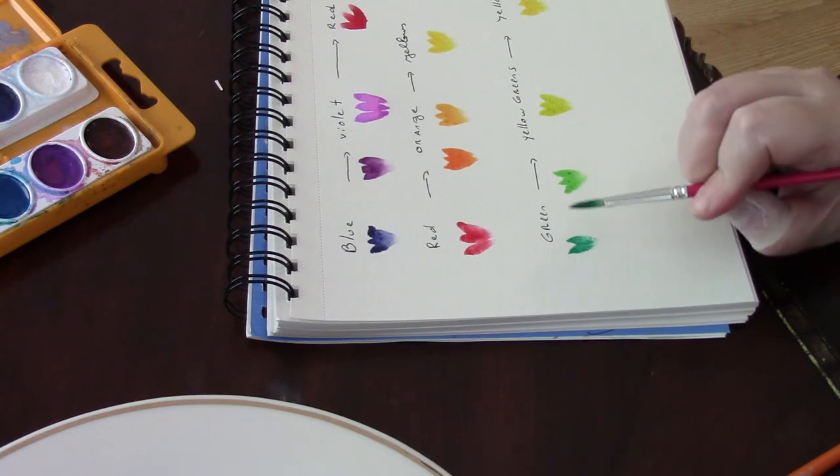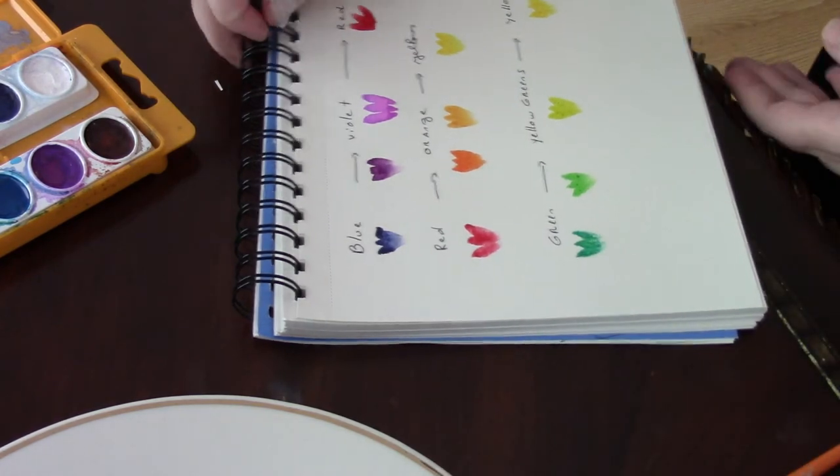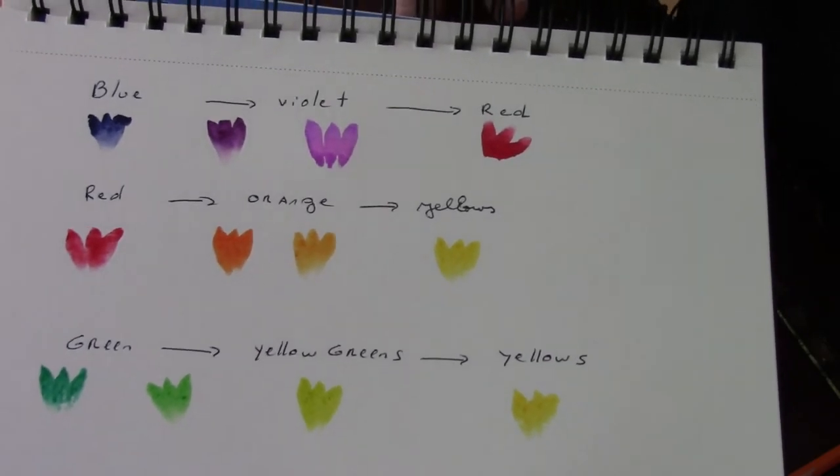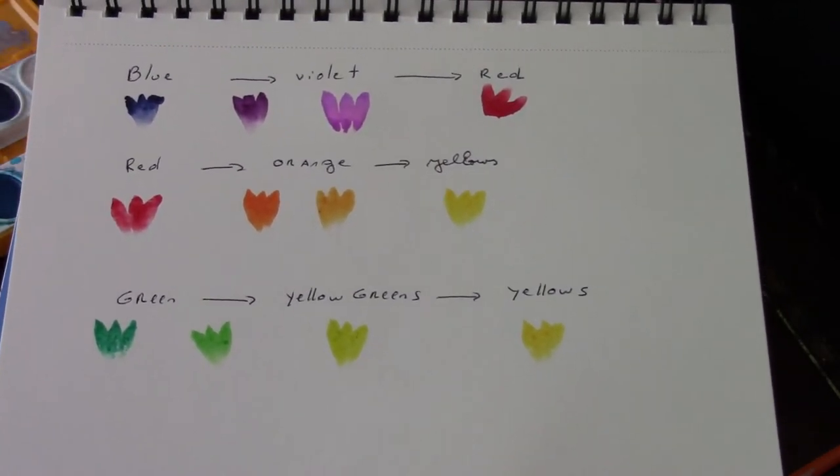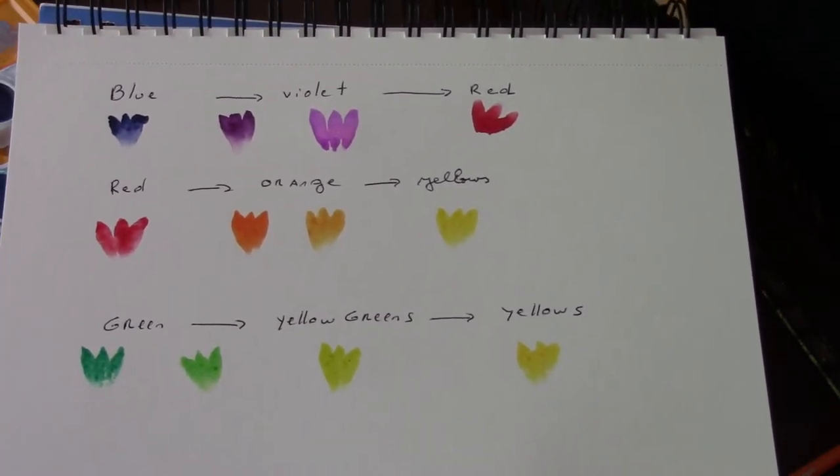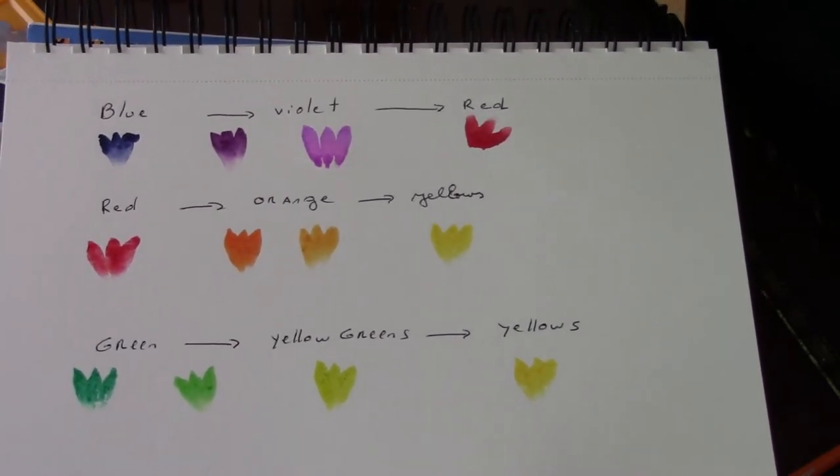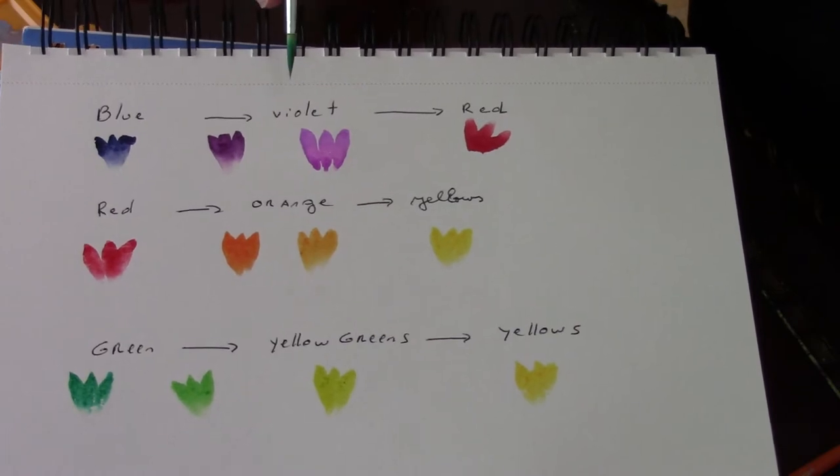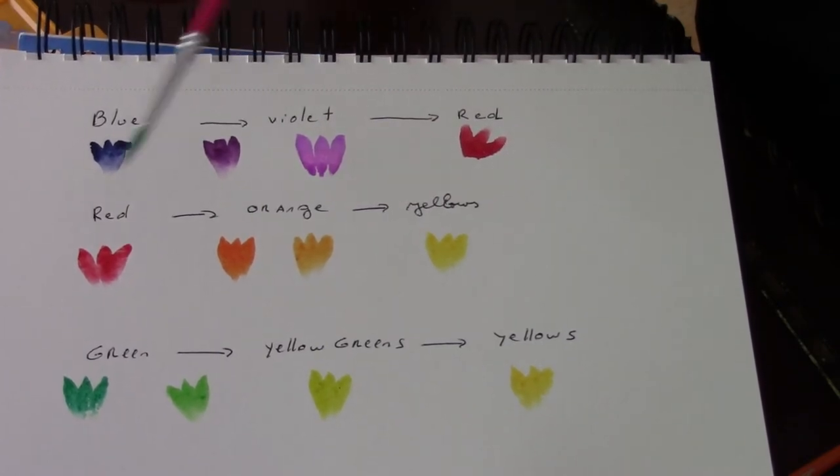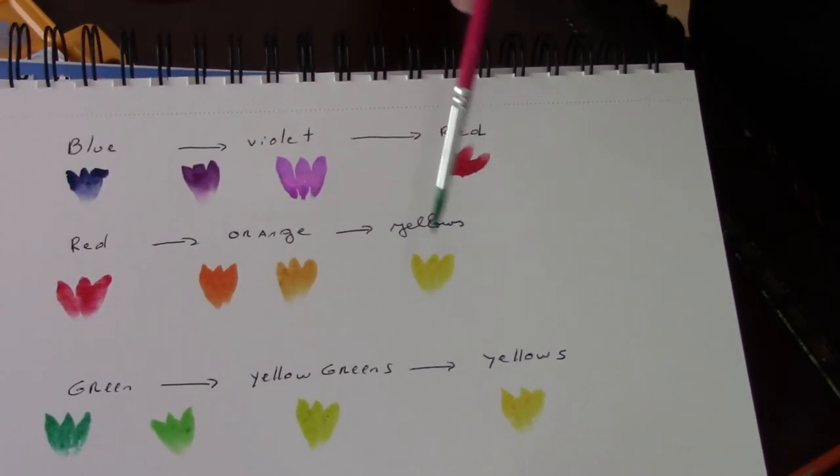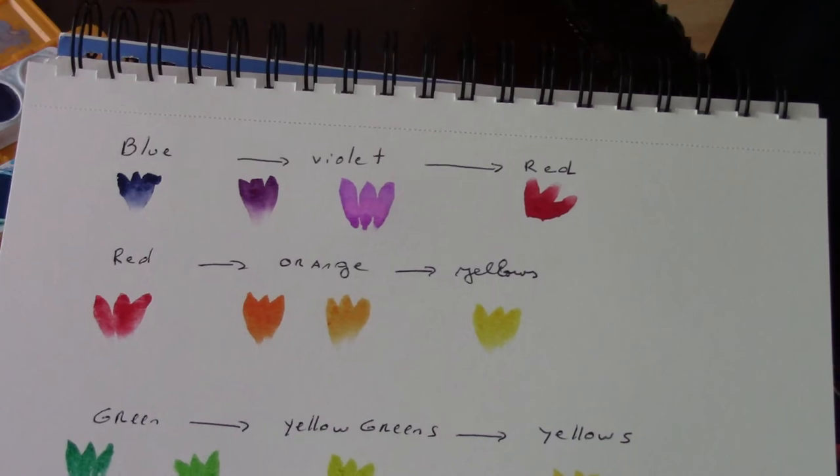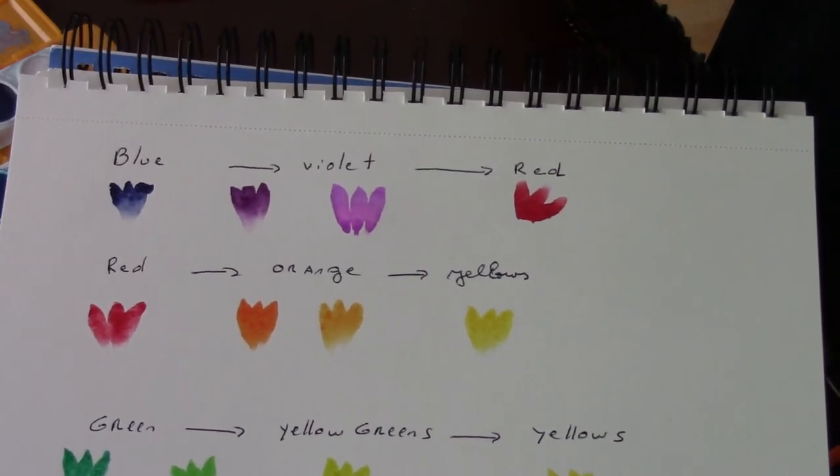I just want to show you what we did today. Let me see if I can move it a little bit bigger. So you see these are all happy colors, they all look vibrant. What I would recommend from this video is that you write down the following items: blue, violet, red; red, orange, yellow; green, yellow greens and yellow. And you just make those tiny little flowers so you know when you're painting.